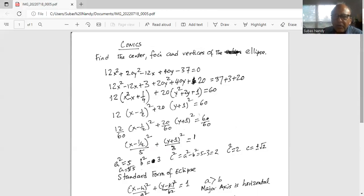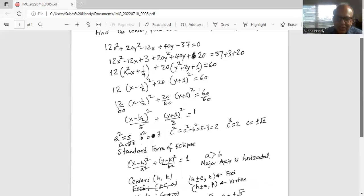Now we compare with the standard form of the ellipse. This should be x minus h whole square divided by a square plus y minus k whole square divided by b square equal to 1. Center is hk.